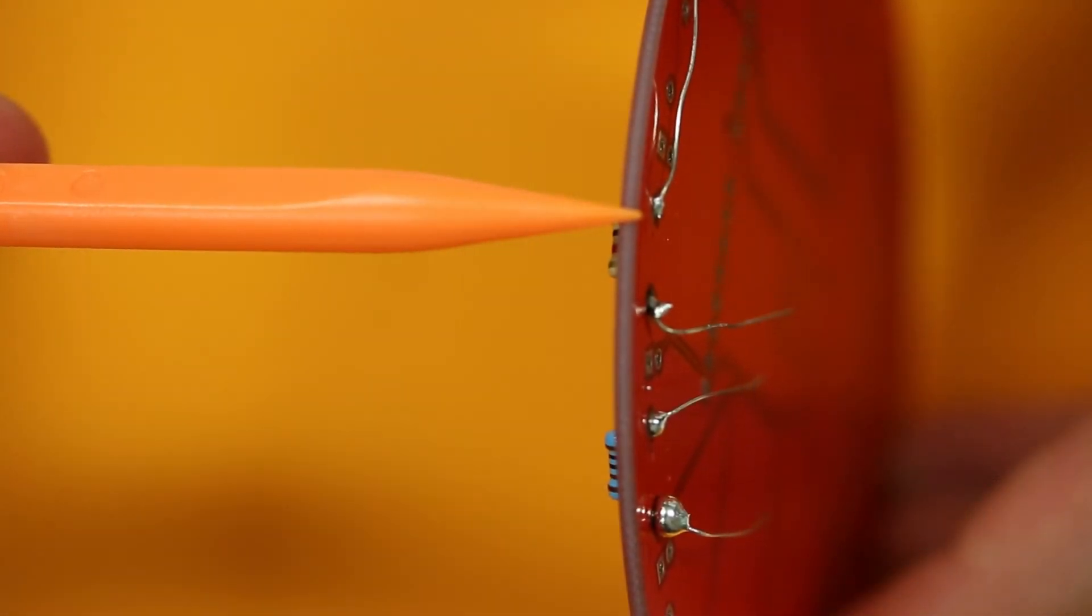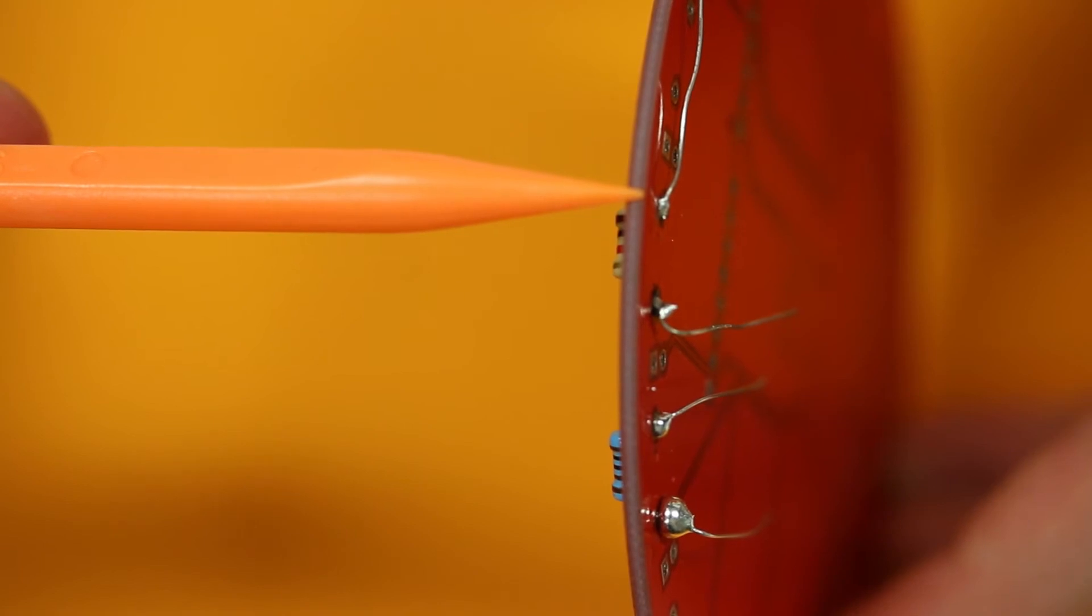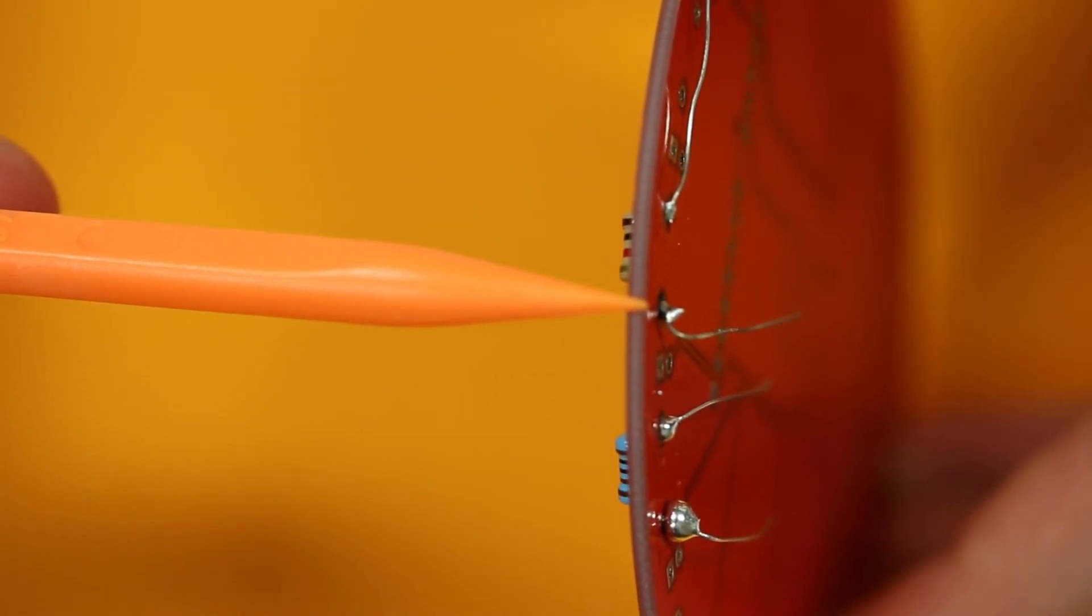So let's take a look at the same solder joints, but from a different angle. We'll start with this first one that we made. It looks pretty good. If anything, we could use a little bit more material. The second joint looks really good. It has that mountain or Hershey Kiss shape.